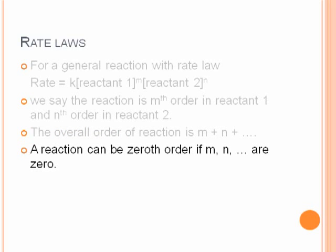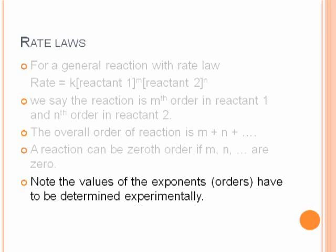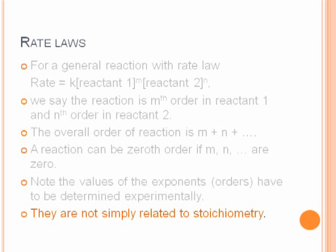A reaction could be 0th order if m or n was 0, which means the reaction is independent of that particular concentration. Note that the values of the exponents or orders have to be determined experimentally and they're not just related to the stoichiometry.